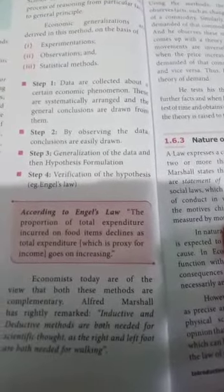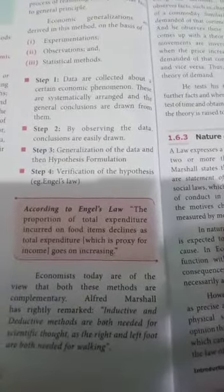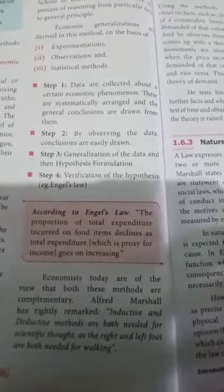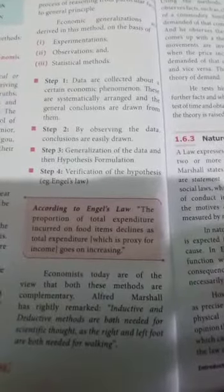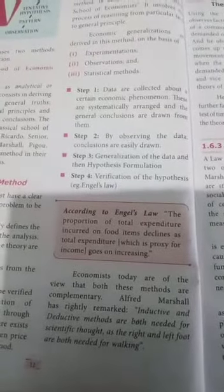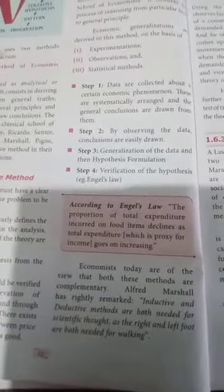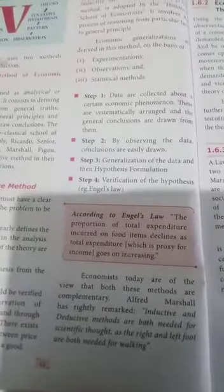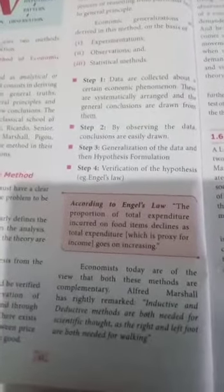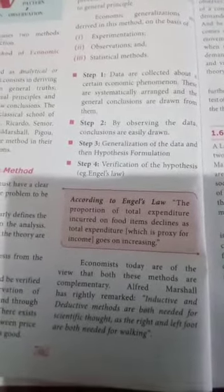According to Engel's law, the proportion of total expenditure incurred on food items declines as total expenditure — which is a proxy for income — goes on increasing. This is an example of the inductive method.